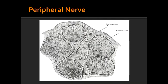What is endoneurium? Endoneurium is the inner layer of the nerve that wraps around single nerve fiber layers. In what condition would you find inflammatory infiltrate in the endoneurium? You would find inflammatory infiltrate in the endoneurium in Guillain-Barré syndrome.